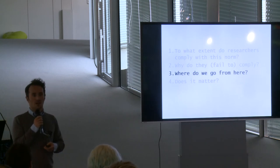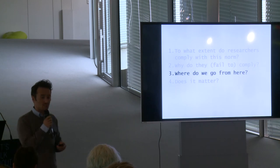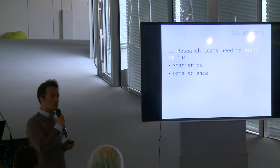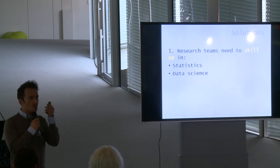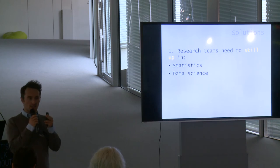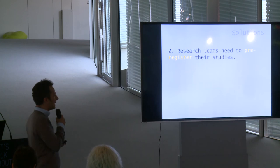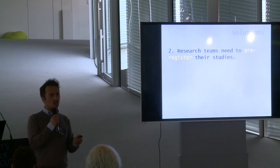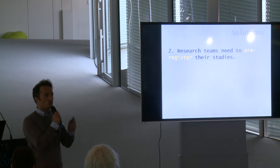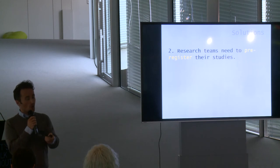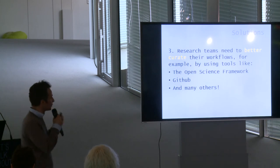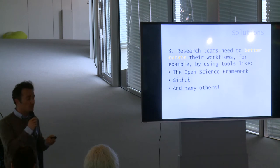Where do we go from here? I don't want to dampen your enthusiasm — there are things we can do collectively and individually. First, research teams need to scale up, particularly in statistics to better understand the meaning of the p-value, and in data science when it comes to curating, archiving, and keeping a good record of workflow. Research teams also need to pre-register their studies — increasingly people pre-register their hypotheses so their hands are tied, and when they have access to the data they just run the models they said they would. Teams also need to better curate their workflows using tools such as the Open Science Framework or GitHub.